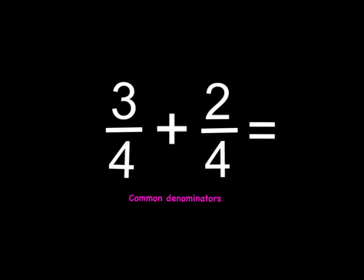All you need to do is move the 4 over. You need to leave the common denominator as a 4, because you never ever ever add the bottom. Never ever ever add the bottom. Once you've got the 4 as your common denominator, all you simply have to do is add the top. You only ever ever add the top.